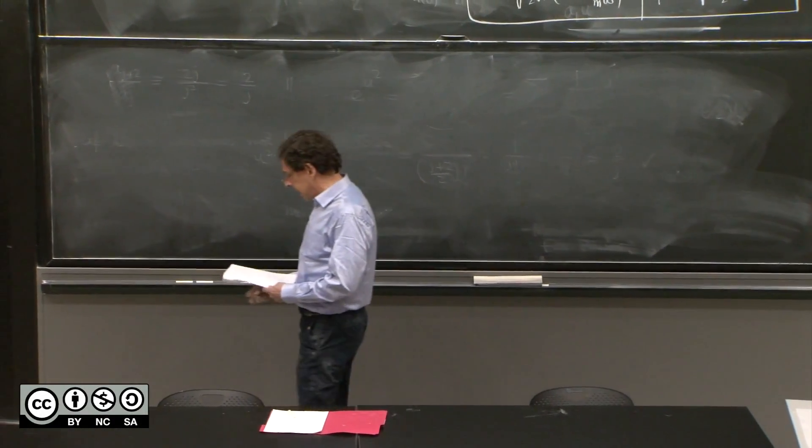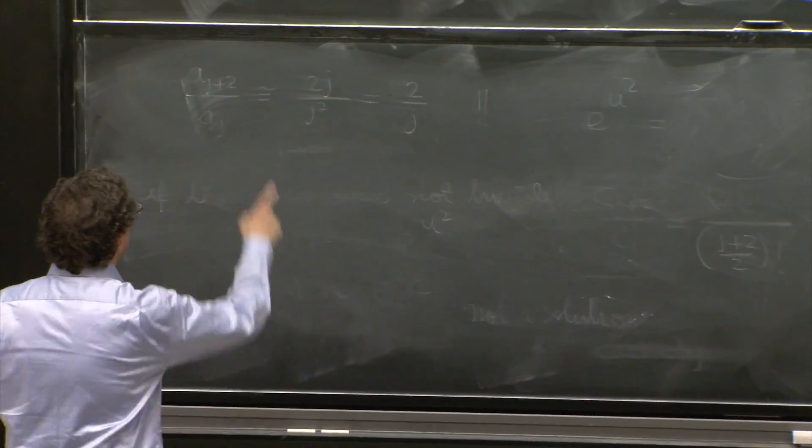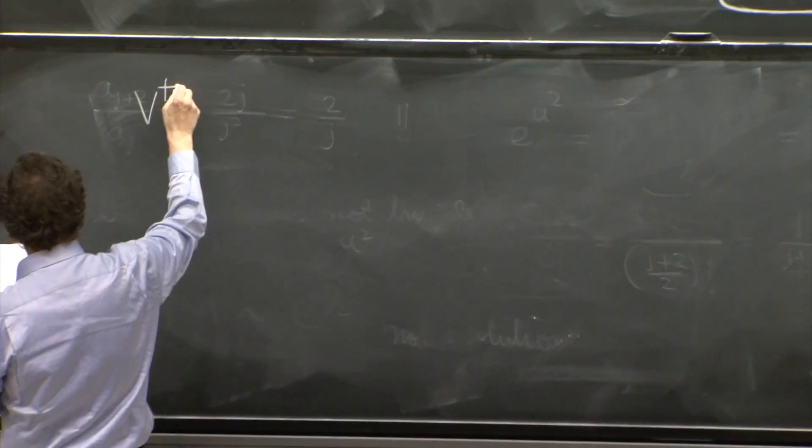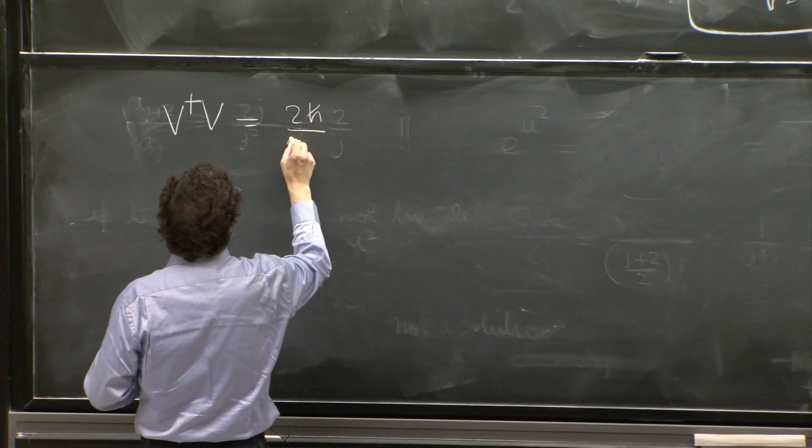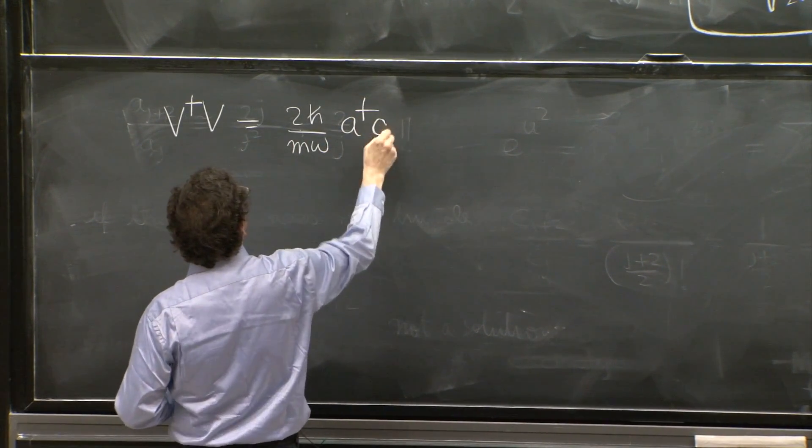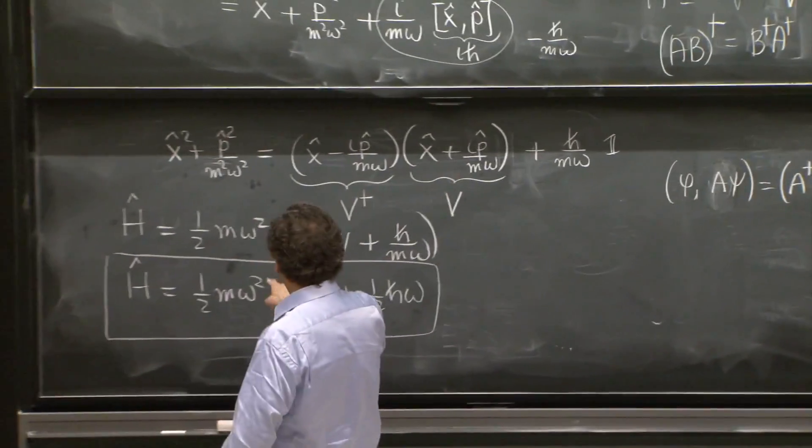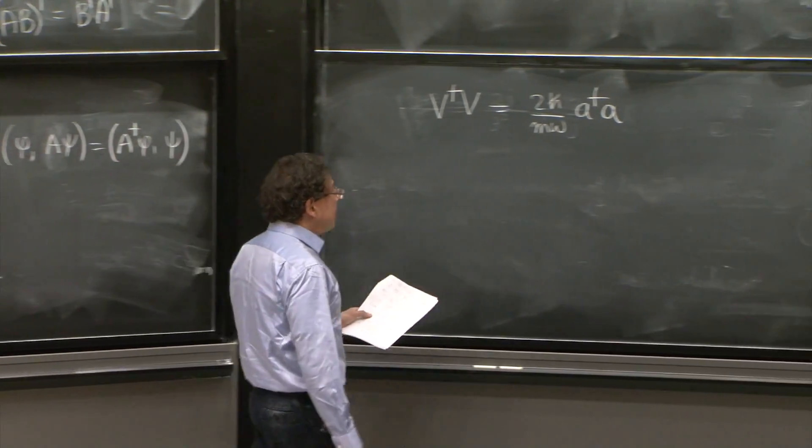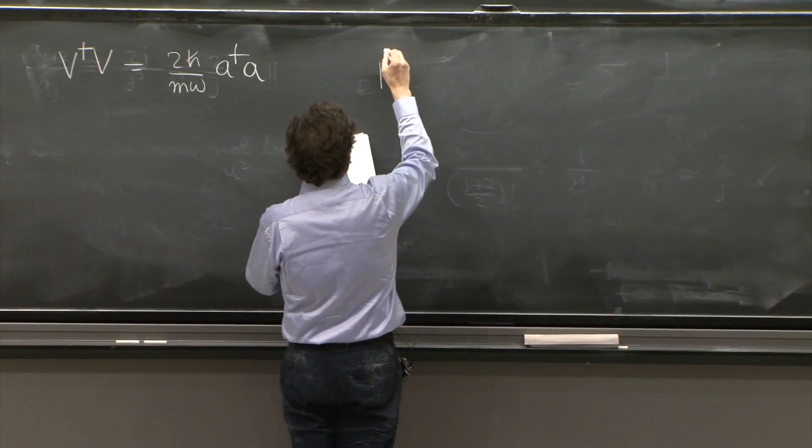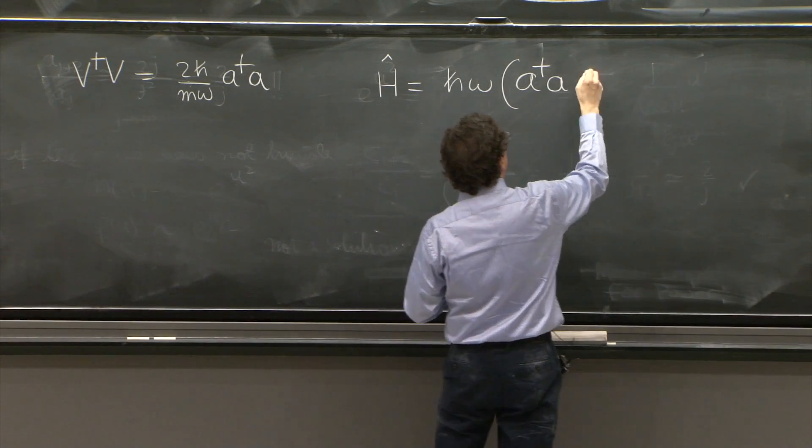So let's write the Hamiltonian again in terms of v and v dagger. From this equation, v dagger v is equal to 2 h bar over m omega a dagger a. From the immediately above equation, v dagger v is this, and we substitute into the Hamiltonian. The Hamiltonian becomes the nice object h bar omega a dagger a plus 1/2.